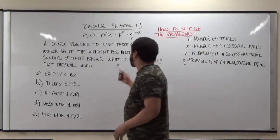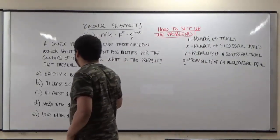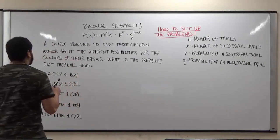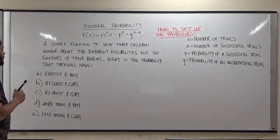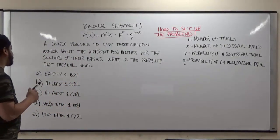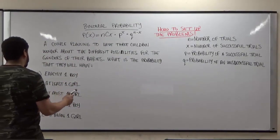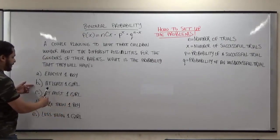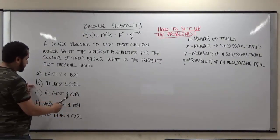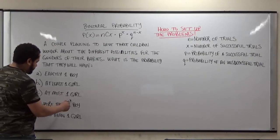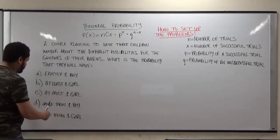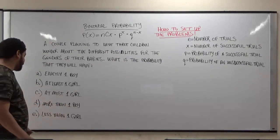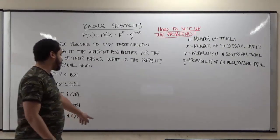We have a couple planning to have three children wondering about the different possibilities for the genders of their babies. What is the probability that they will have: A, exactly one boy; B, at least one girl; C, at most one girl; D, more than one boy; and E, less than one girl.